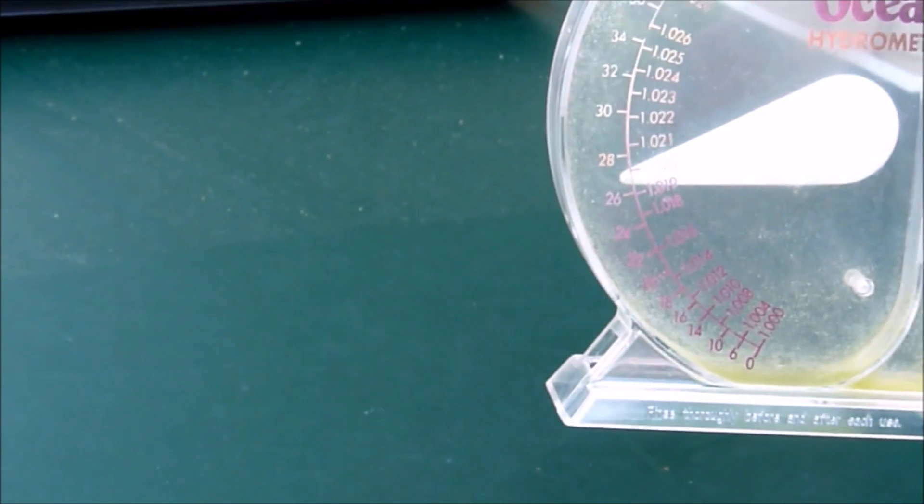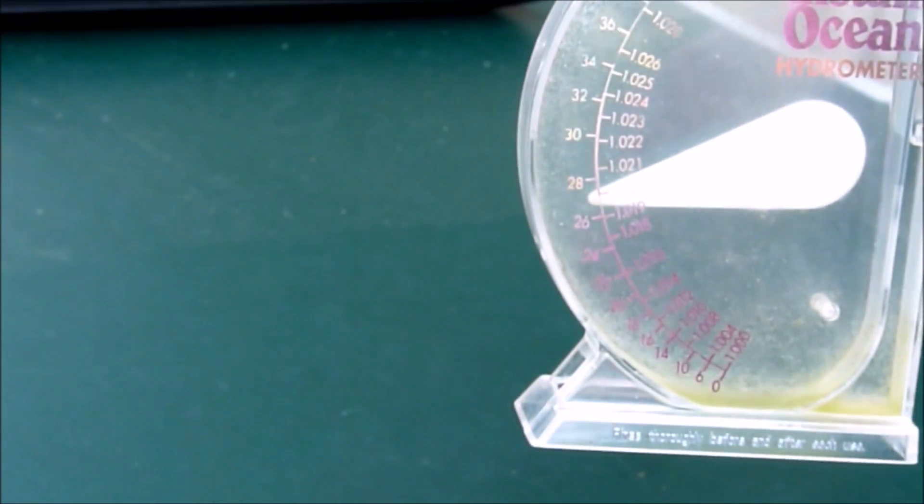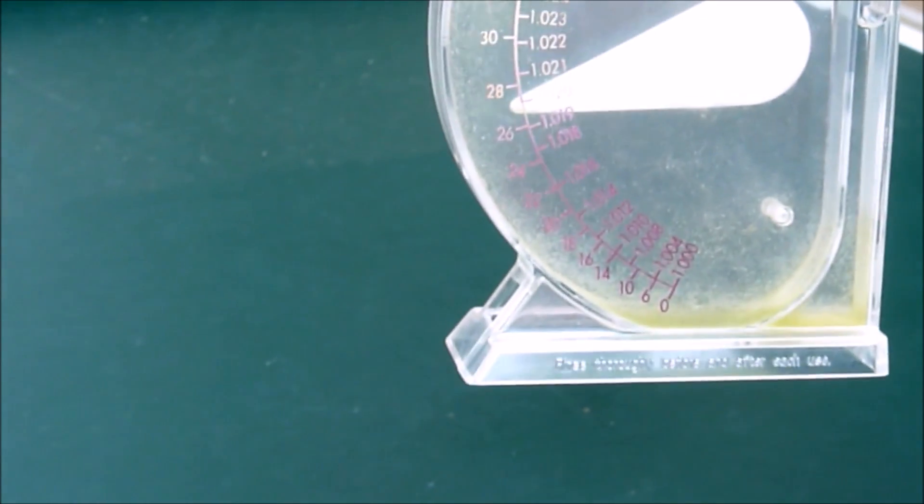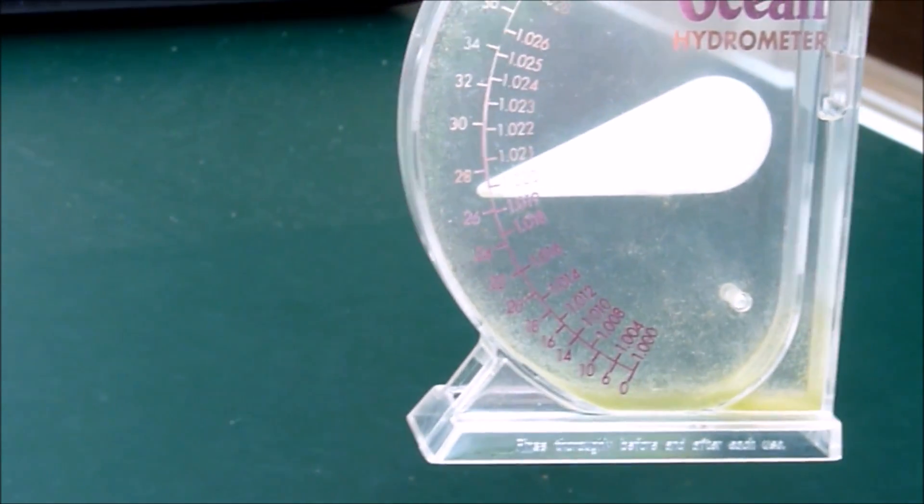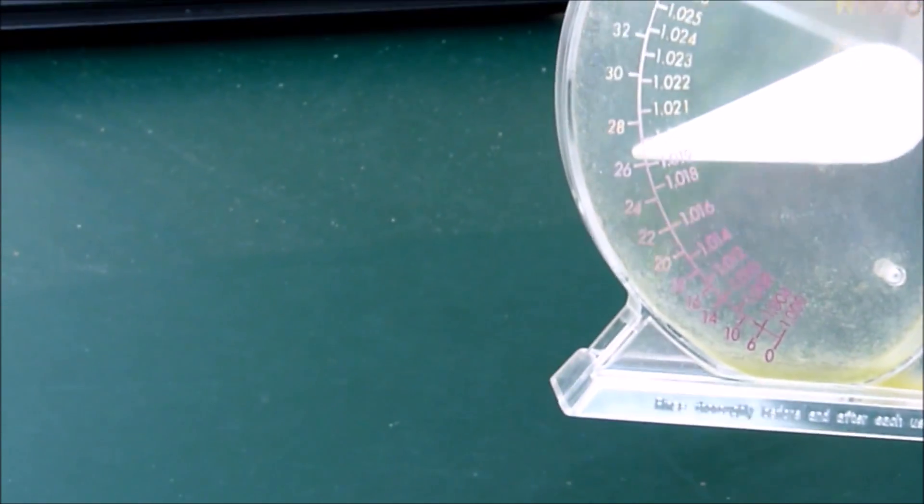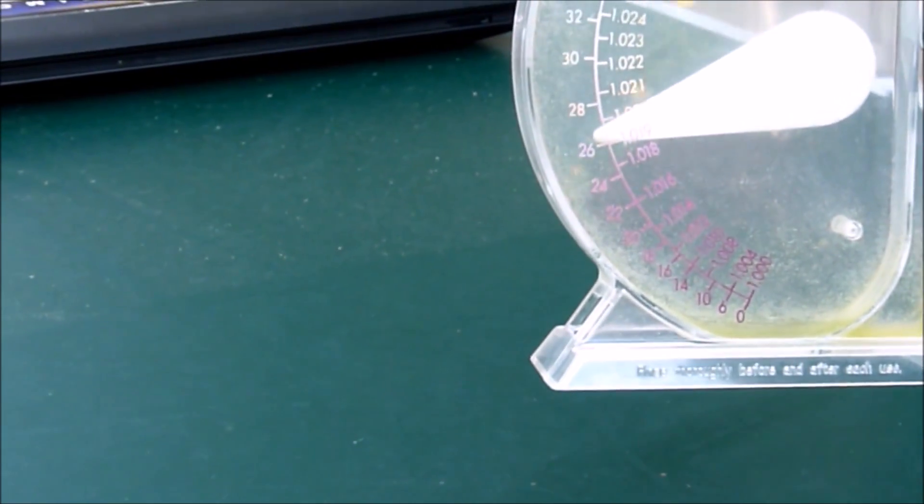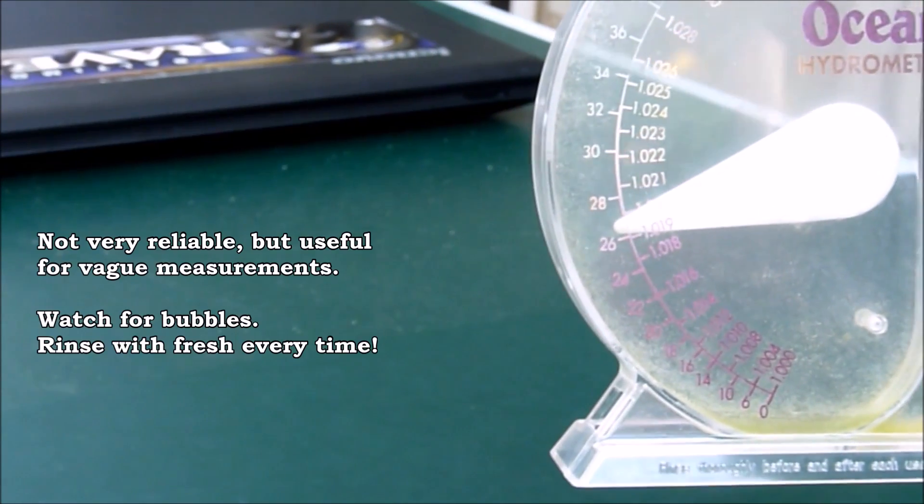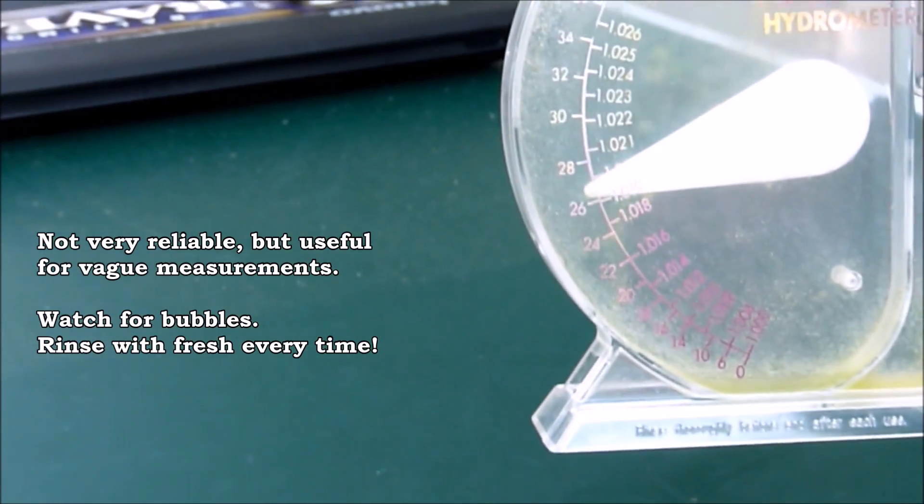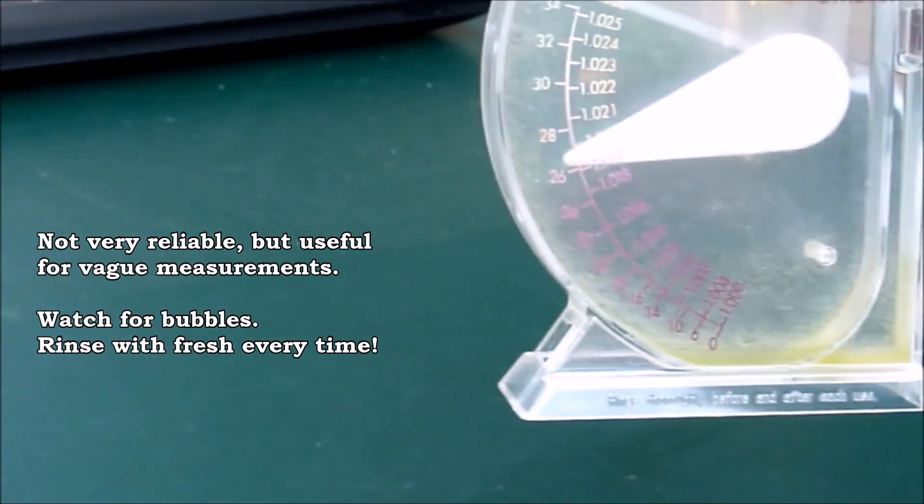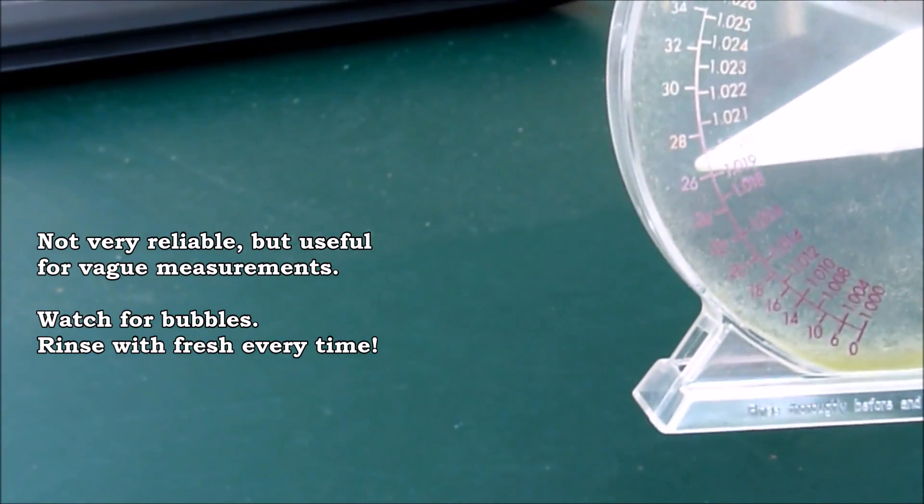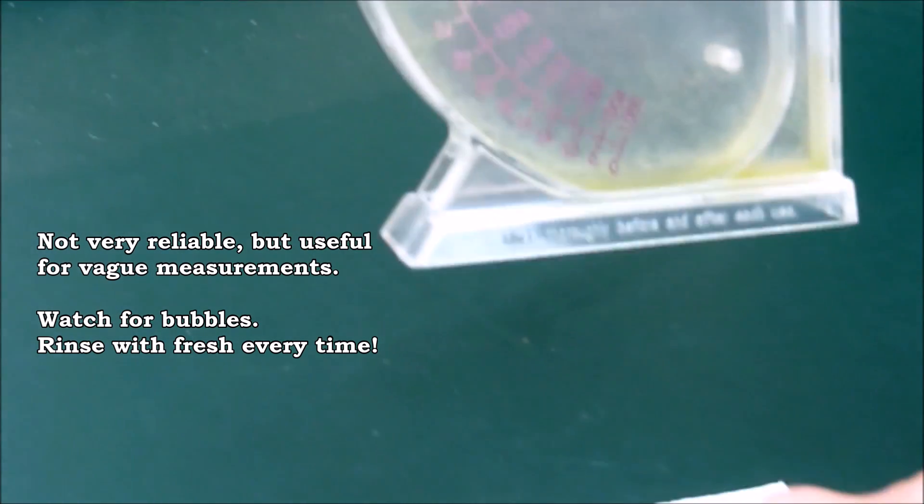So, what you have to do is you have to calibrate this unit with a more accurate unit to figure out what the salinity is. In my case, I've calibrated this. And by calibration, the only way you can calibrate it is by comparing to another specific gravity measuring tool. So, 1.020 on this is really 1.024.